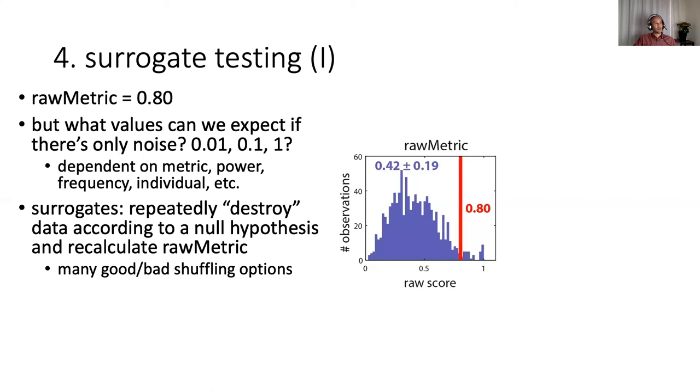And in this case, the average is 0.42. And so that would indicate that our original value of 0.8 is actually unlikely to have been generated by chance or by noise. A small side note here is that how you destroy your data, which we typically do using a shuffling approach, really matters. There's good and there's bad shuffling options, and we go into some detail in the paper.